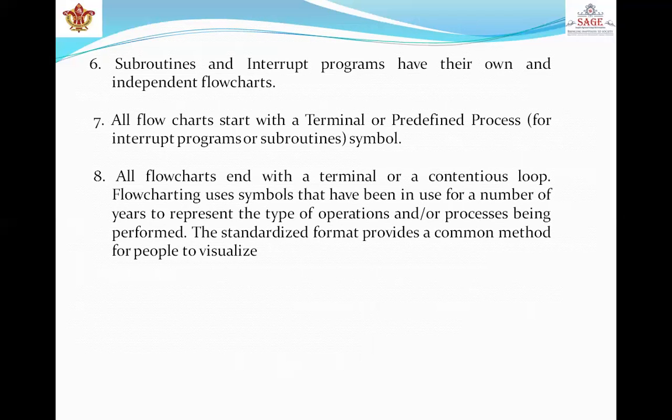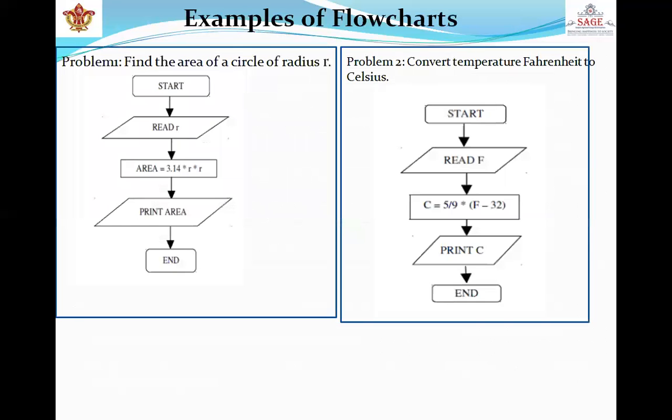First is starting and ending points. Every flowchart must have a starting and ending point. They are represented by a rounded rectangle or ellipses with the word start and end inside. Since the process may have several different results depending on the decision made during the flow, the flowchart can have several possible end points with a circle or oval representing each end point. Begin by drawing the start shape and draw the end symbol last. Next is action in flowchart. A rectangle stands for an action or operation that must be taken to move to the next step in the process.